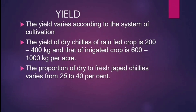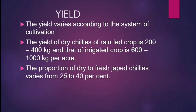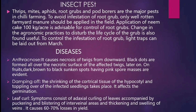Yield. The yield varies according to the system of cultivation. The yield of dried chillies of rainfed crop is 200 to 400 kg and that of irrigated crop is 600 to 1000 kg per acre. The proportion of dried to fresh chillies varies from 25 to 40%. Insect pests — thrips, mites, aphids, root grubs and pod borers are the major pests in Chilli farming.